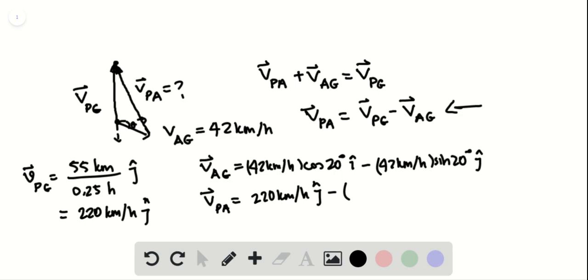Let me do this algebra. 42 times cosine 20 is 39.5 i-hat, minus 14.4 kilometers per hour j-hat.